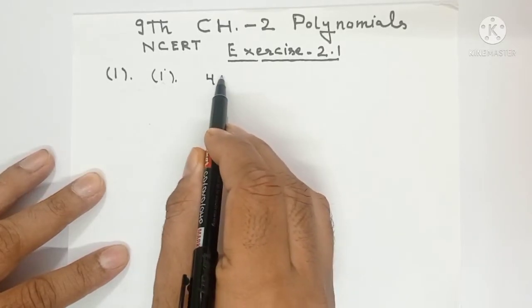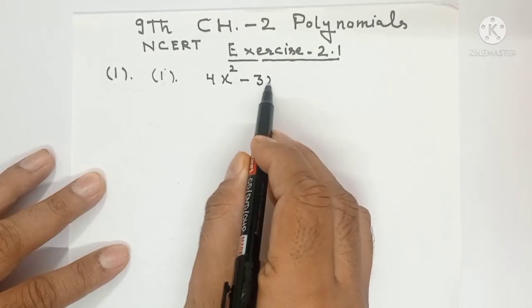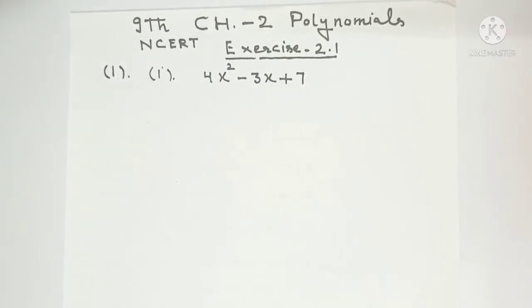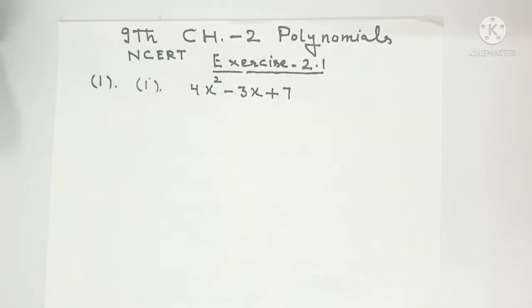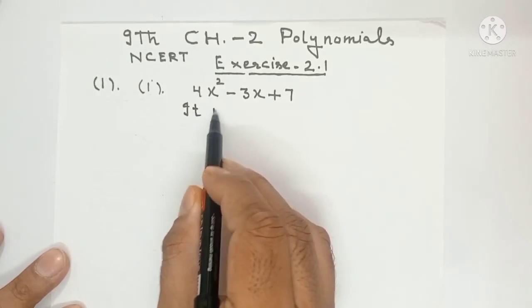It is given 4x square minus 3x plus 7. So in the question it is asked that which of the following expressions are polynomials and which are not and further we have to give a reason also. So wherever it is a polynomial there is no need to give the reasoning. So what can we write? It is a polynomial in one variable.